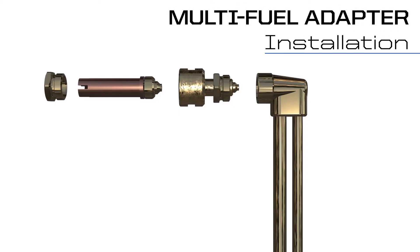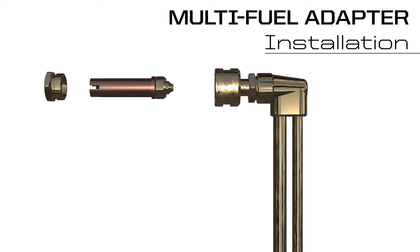The multifuel adapter replaces the standard cutting tip. Simply screw it into the head of the torch, place a high heat series tip inside the multifuel adapter, and secure it with the tip nut.